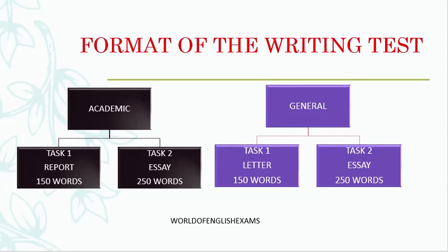Task 1 is a report — basically a written summary of a graph or some sort of diagrammatic representation given to you. You are supposed to summarize and explain it in your own words in at least 150 words. Task 2 for academic students is an essay, and you should write a minimum of 250 words. The approximate time given for this is 40 minutes.